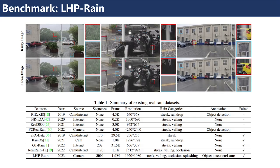We then construct a large-scale and high-quality real rain benchmark, LHP-Rain. To our best knowledge, LHP-Rain is the largest paired real rain dataset, including 3000 sequences and more than 1 million raining-clean pairs with high resolution. Besides, it is the first benchmark to address the problem of ground splashing rain removal.